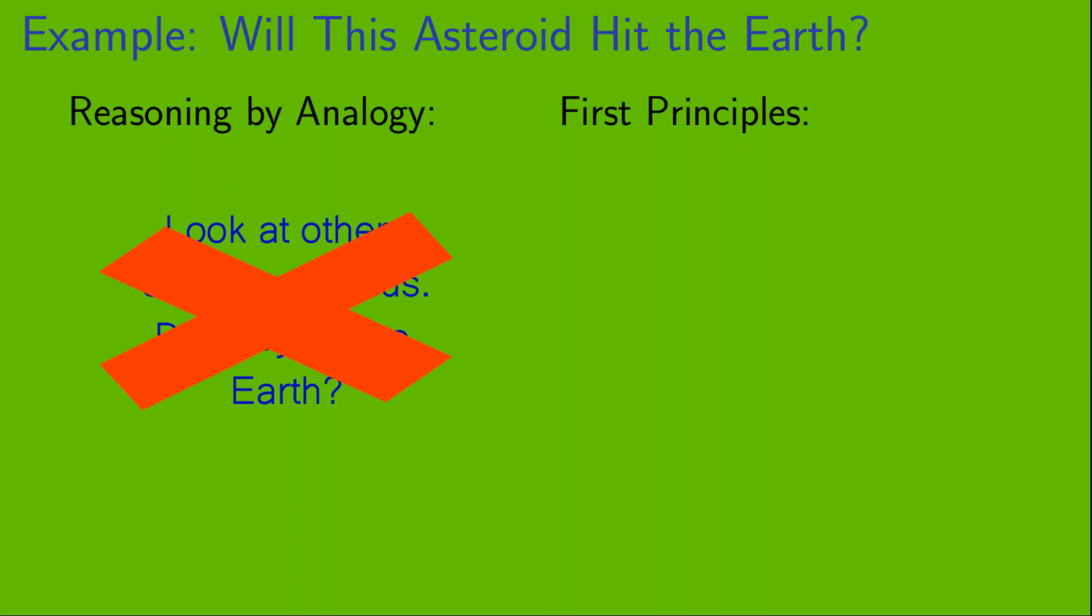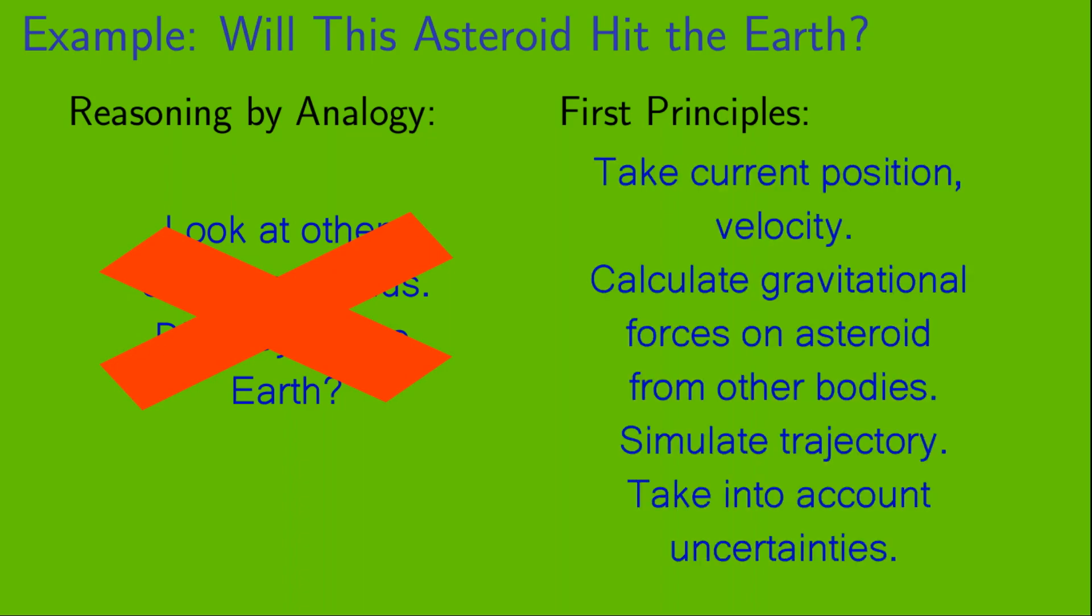Instead, we use the first principles method. In that case, we take the current position and velocity of the asteroid. We calculate the gravitational forces on that asteroid from other bodies in the solar system. We simulate the trajectory and we take into account the uncertainties. So, obviously, that's a superior method for this type of problem.